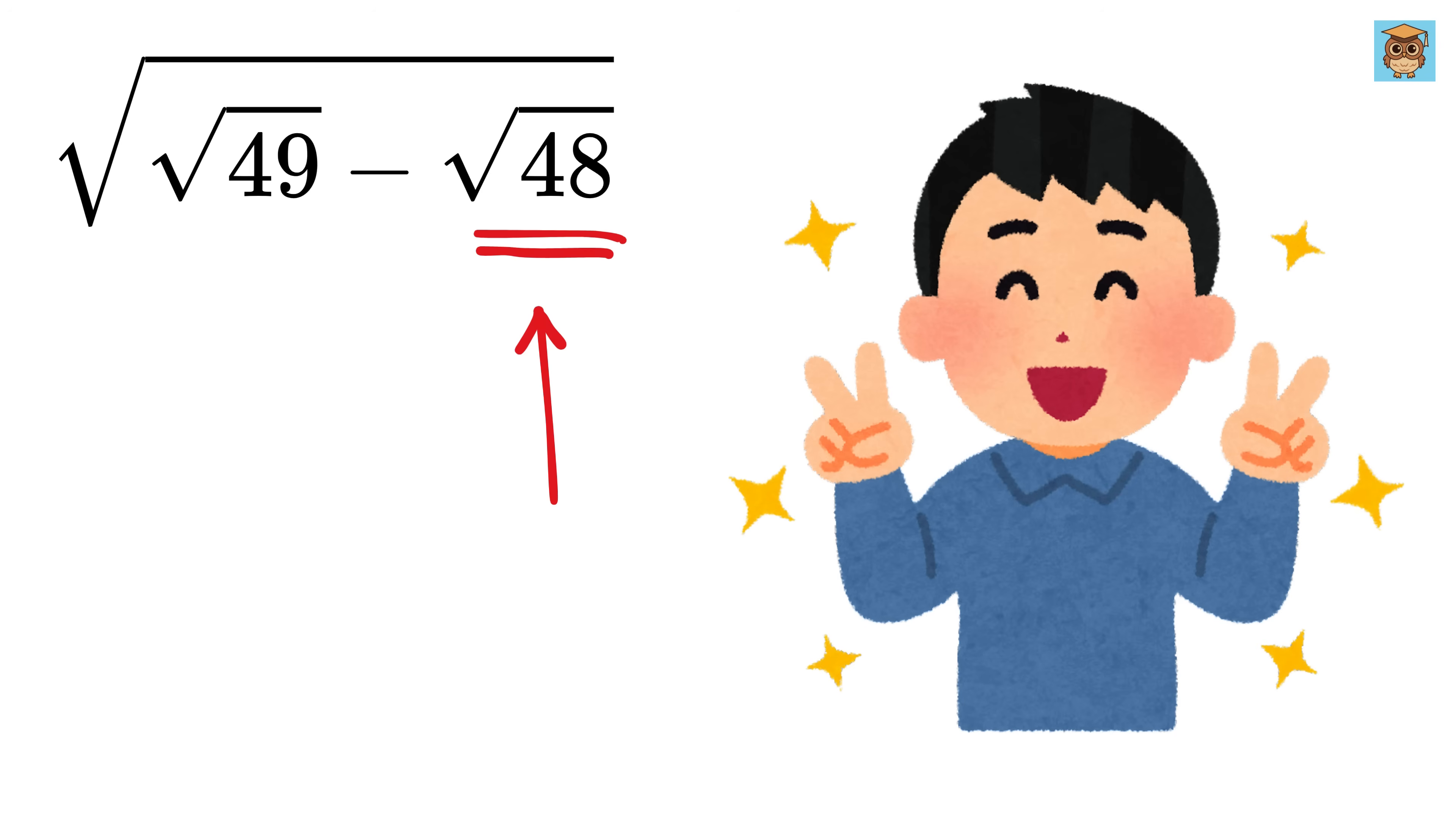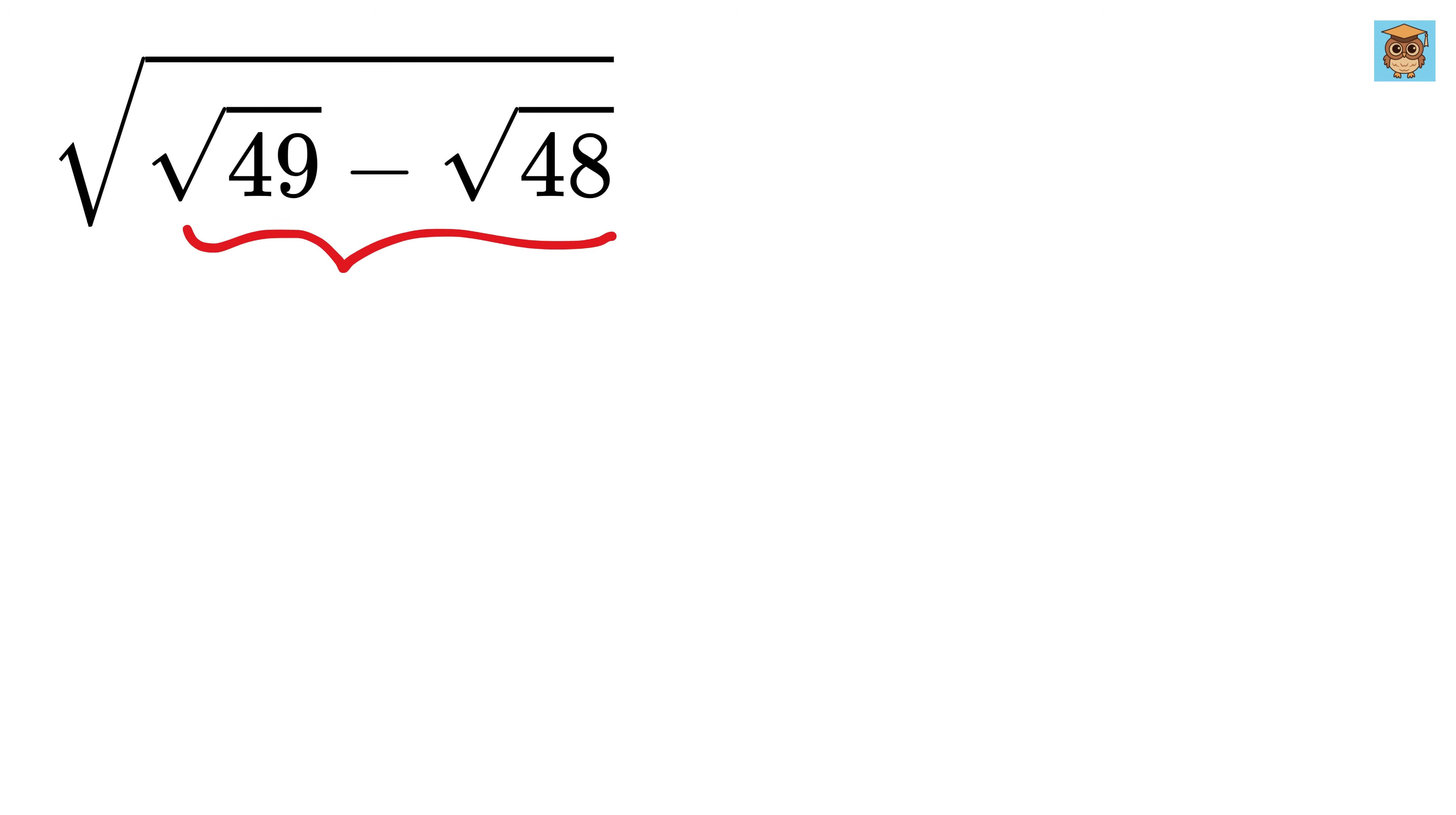Let's solve it step by step. First, we deal with the inner part, which is the square root of 49 minus square root of 48. We already know that the square root of 49 is 7. Now let's break that 7 down in a clever way.